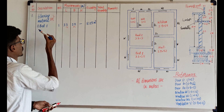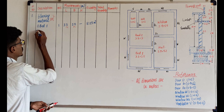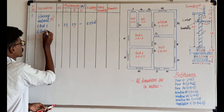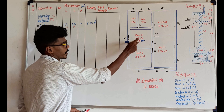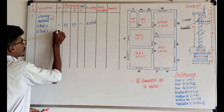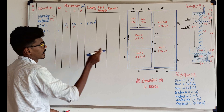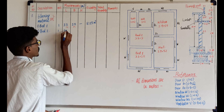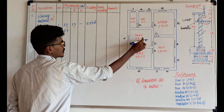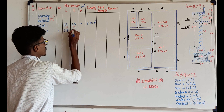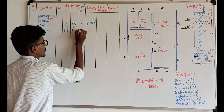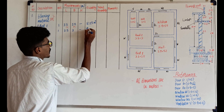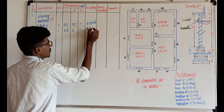Now let's go to the second one — Bedroom 2. One bedroom is not this dimension. So it is the length of it: 3.3. Breadth: 3m. Height: blank. So 3.3 x 3 = 9.9 m².